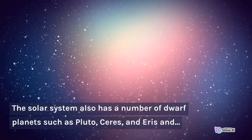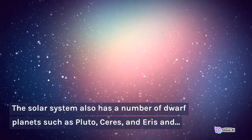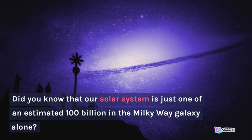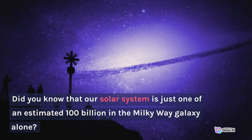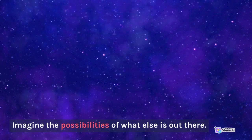The solar system also has a number of dwarf planets such as Pluto, Ceres and Eris and numerous asteroids and comets. Did you know that our solar system is just one of an estimated 100 billion in the Milky Way galaxy alone? Imagine the possibilities of what else is out there.